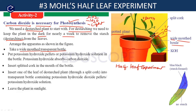Second, put potassium hydroxide pellets — or potassium hydroxide solution — inside the bottle. If solution is available, use solution; otherwise use pellets. We place KOH inside the wide-mouth bottle because the bottle already contains carbon dioxide. This KOH will absorb the carbon dioxide present inside the bottle.